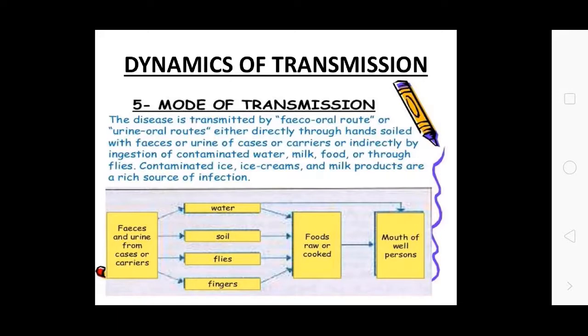Additional indirect sources include contaminated ice, creams, and milk products. Flies landing on food and people consuming contaminated outside food are key modes of spreading infection.